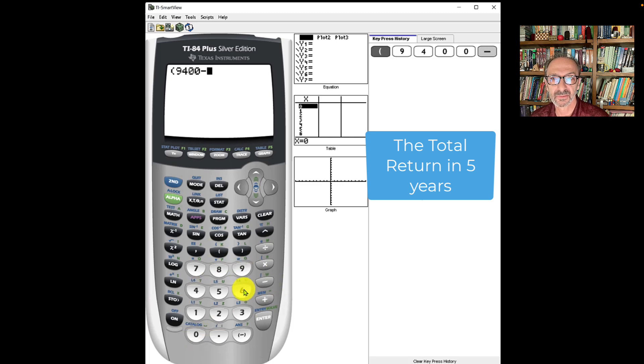And we start with the following: open parenthesis, and we have $9,400 minus $6,000, close parenthesis, divide by $6,000, the principal, and we hit enter.